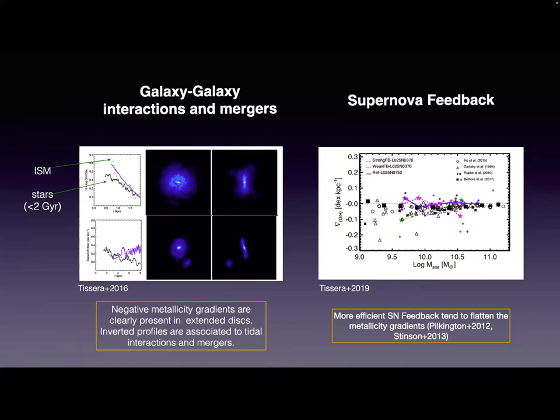Another process that modifies the metallicity gradient is supernova feedback. We studied the metallicity gradients as a function of stellar mass in the EAGLE simulations using three runs where supernova feedback was changed. With weak supernova feedback, we get a relation with more negative metallicity gradients at lower masses. But with a very strong supernova feedback prescription, for the same galaxies we get a different trend: flatter or even positive metallicity gradients for lower stellar masses and negative for more massive ones. So supernova feedback can change the distribution of metallicity in galaxies and modify the relation between gradients and stellar mass.